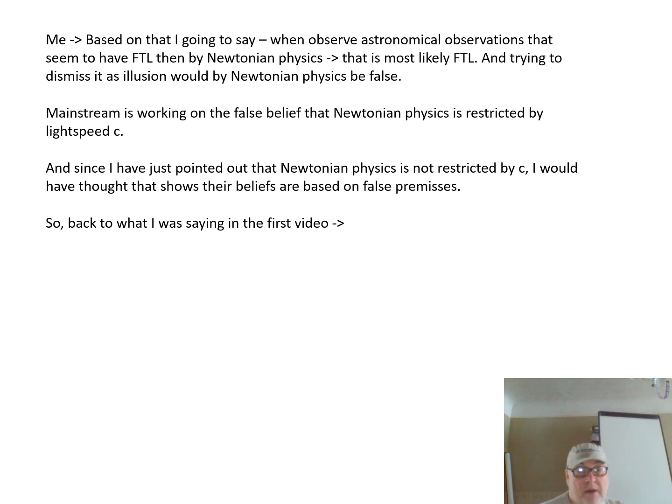Based on that, I'm going to say when observing astronomical observations that seem to have FTL, which is faster than light, then by Newtonian physics that is most likely faster than light FTL. And trying to dismiss it as an illusion would be, by Newtonian physics, false. Mainstream is working on the false belief that Newtonian physics is restricted by light speed c, and since I've pointed out that Newtonian physics is not restricted by c, I would have thought that shows that their beliefs are based on false premises.